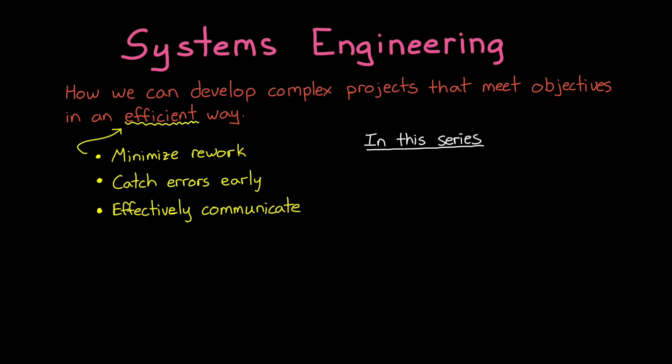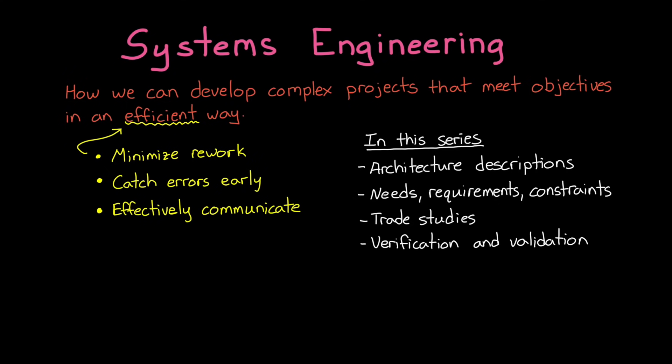To understand how systems engineering helps us accomplish that, we're going to cover how system architectures are developed and described, how we communicate the needs, requirements, and constraints throughout the project, how we optimize the design through trade studies, and how we know the system does what it's supposed to in the end.